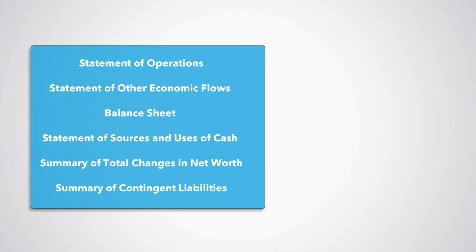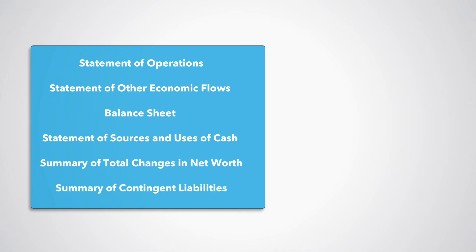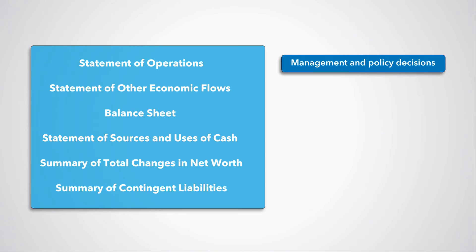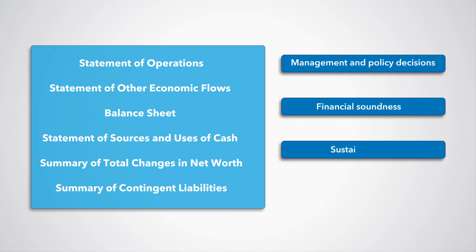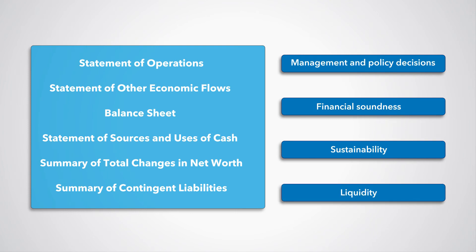These six statements are the core tools summarising the results of management and policy decisions in the various parts of the public sector, the financial soundness of the various parts of the public sector in ways commonly applied to other sectors of the economy, the sustainability of policy decisions of government or a public corporation over the long term, and the liquidity and financing constraints of government or a public corporation over the short term.